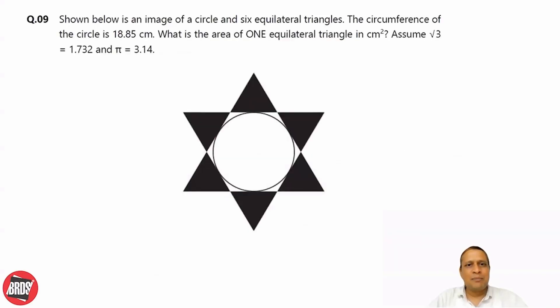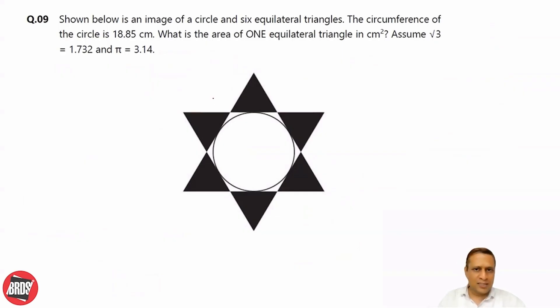Shown below is an image of a circle and six equilateral triangles. The circle is there, six equilateral triangles are there. Here you can see it forms a regular hexagon.